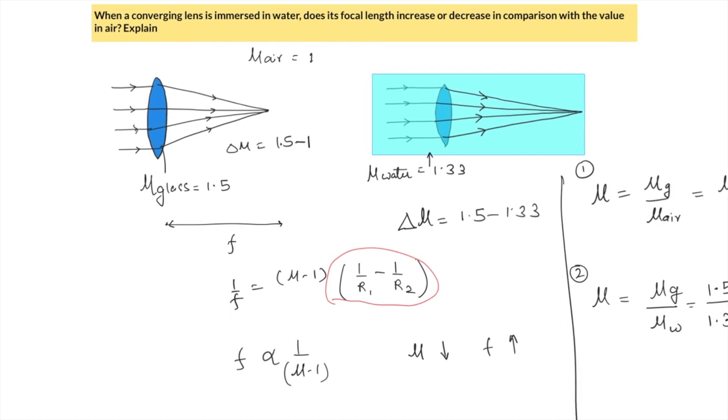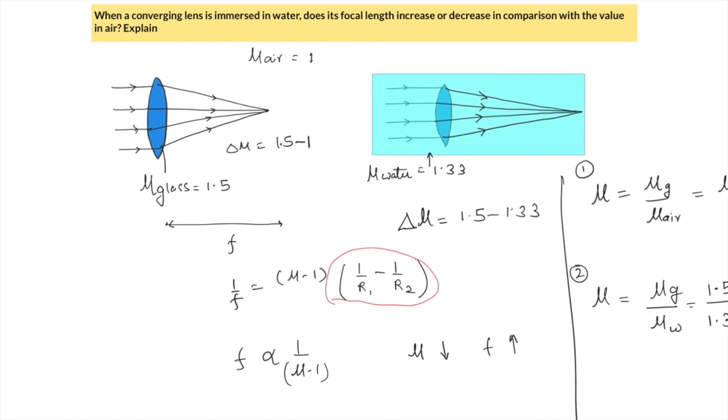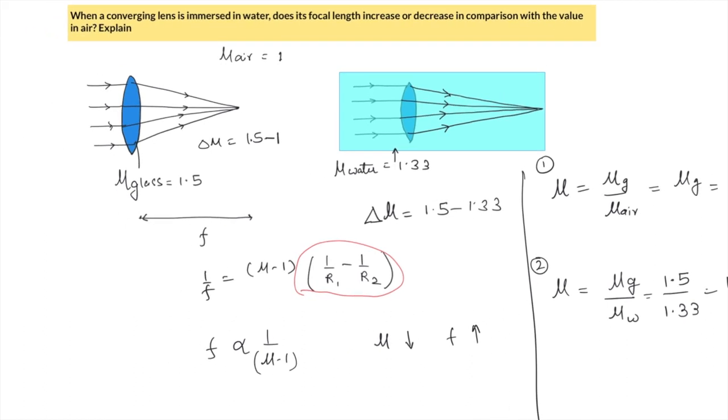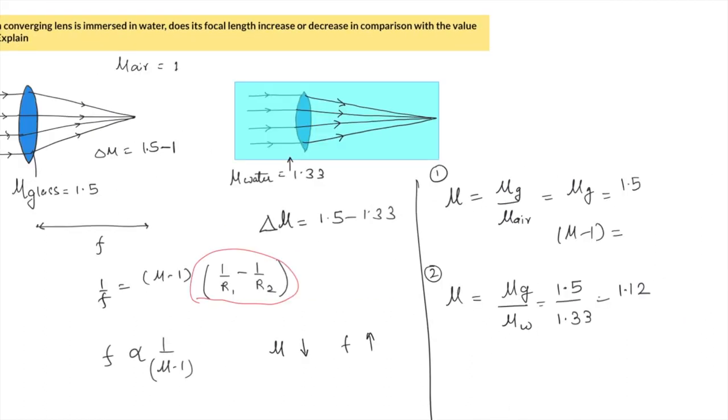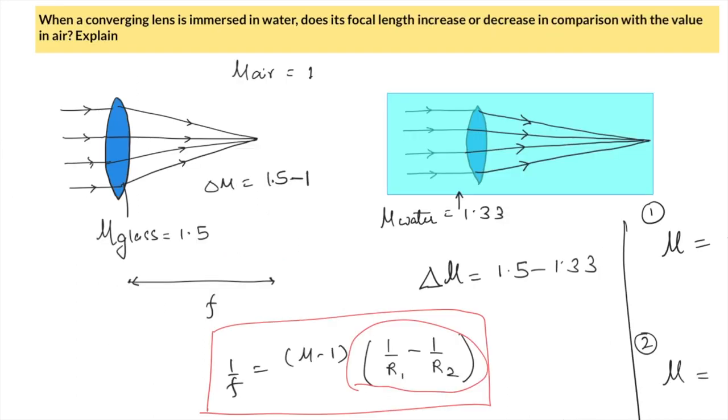So now if we look at our dependence of focal length: earlier, μ minus 1 would be 0.5, whereas in this case μ minus 1 will reduce to 0.12. You can see that because μ minus 1 is going down, hence f will increase. So we can conclude that when a converging lens is immersed in water, its focal length increases and not decreases.